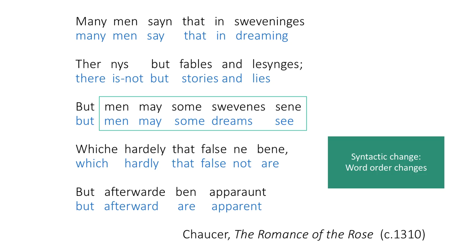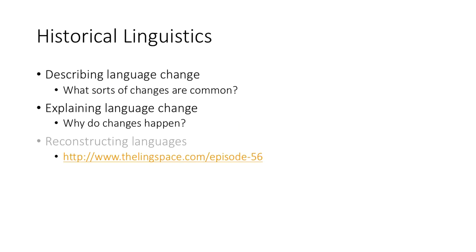You also see syntactic change — so word order changes. This reads 'but men may some dreams see,' whereas in Modern English we would say 'but men may see some dreams.' So historical linguistics is all about looking at language change. One thing that historical linguists do is describe language change: what sorts of changes are common, and what are uncommon?